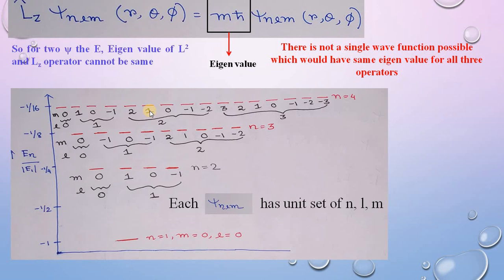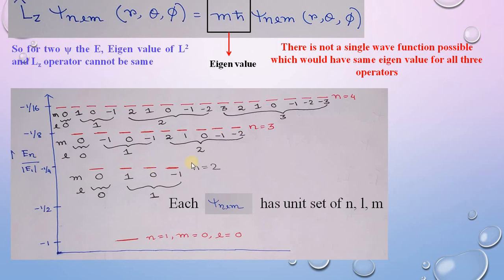Each state psi_nlm has a unique set of quantum numbers n, l, m. For example, one state has n equals 2, l equals 1, m equals plus 1, while another has n equals 2, l equals 1, m equals minus 1. All states have separate sets of quantum numbers which differentiate them even though they share the same energy.